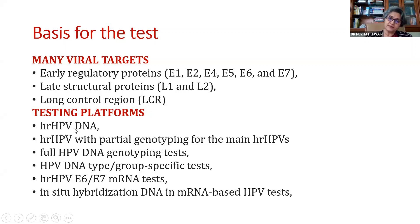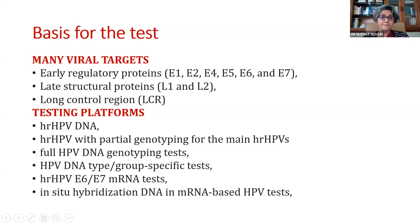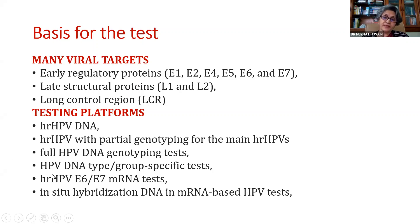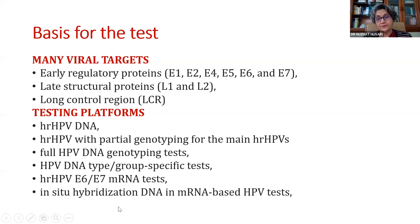The testing platforms can be either DNA detection, partial genotyping mainly for common subtypes like 16 and 18, or certain platforms doing full HPV genotyping giving the entire range of HPVs present. There are group-specific tests, and there are tests based on E6/E7 mRNA — a classical example being the Aptima. And you can also have in-situ hybridization used as a technology, which was actually the first technology used — the hybrid capture.